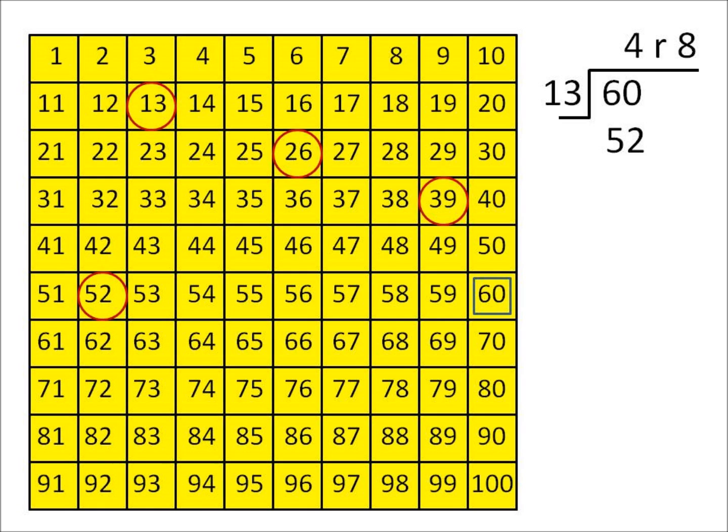Then they're going to go ahead and subtract and they can do that by starting at 60, going backwards and running into the last number that they circled. So they find that their remainder would be 8.